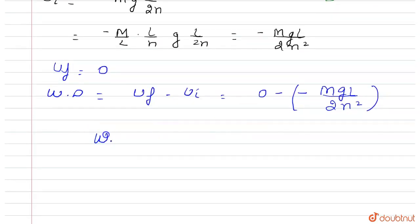So which equals—required work done equals m g l divided by 2n square. This is the final answer.